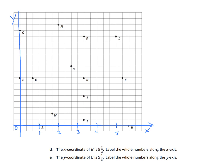Now we look at task E. It says the y-coordinate of C is 5 and 1-third. C is right there. We can presume that these are thirds. We'll make sure that this is correct. Normally we have the same intervals for the x and y-axes, but there are some circumstances where that may not be the case. Counting 3 intervals each time: 1, 2, 3, 4, 5, and 5 and 1-third. C is 5 and 1-third.